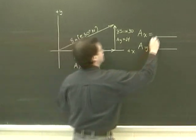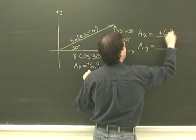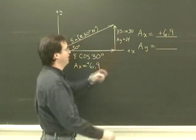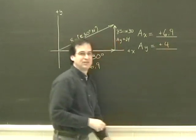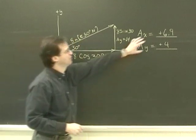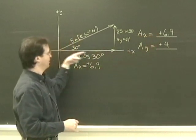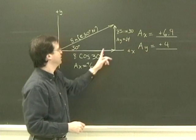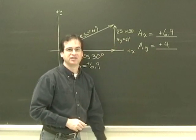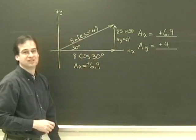So my Ax is positive 6.9. My Ay is positive 4. Now I have the two components. I've checked that they've got the sign, and the sign is correct: to the right, x is positive; up, y is positive. I'm done. I have the two components of this vector.